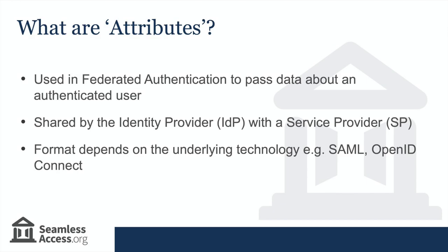Attributes is the term used to describe data about an authenticated user, and attribute release is the process by which that data is shared by an identity provider — such as a research and education institution — with a service provider — such as a publisher — as part of the authentication process.